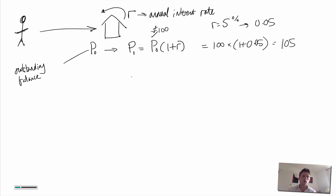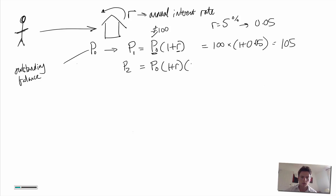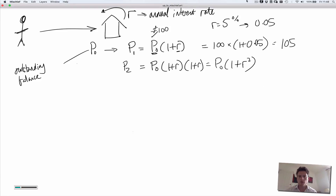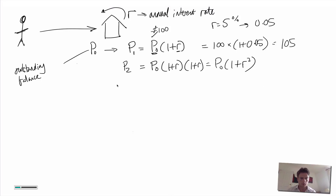At that point our person can get the money back, or they can say keep the money there for a second year. Let's say R stays the same. After two years, because the interest in the second year is applied not only to the initial investment P0 but also to the interest paid in the first year, the total bank balance after two years is P0 times (1 + R) times (1 + R), which is P0 times (1 + R) squared. This is the concept of compound interest, which I'm sure many people have heard about. It's not a massively complicated concept, but there are complications to it.